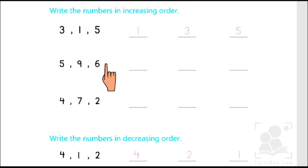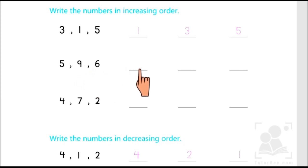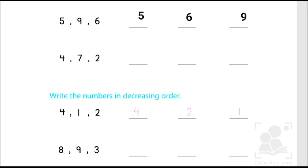Let's solve the next example: 5, 9, 6. When we logically count numbers from 1 to 9, we can find the increasing order. Let's count: 1, 2, 3, 4, 5, 6, 7, 8, 9. Among these three numbers, 5 is the lowest, then after 5 comes 6, and the greatest one is 9. So the increasing order would be 5, 6, and 9.